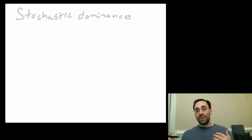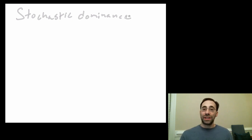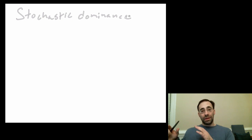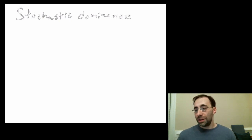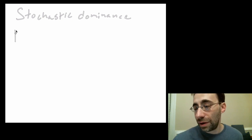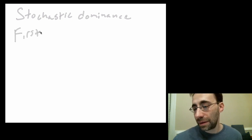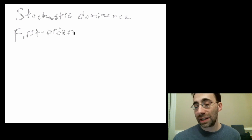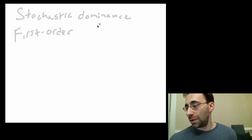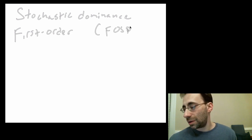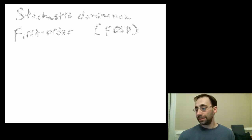In general, there are different kinds of stochastic dominance. The first is known as First Order Stochastic Dominance, or FOSD for short — First Order Stochastic Dominance.